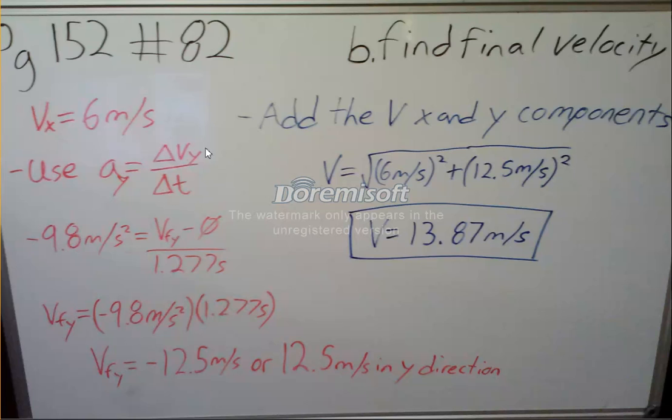We can use this formula right here: a_y component equals delta v_y component over delta t. So we know the acceleration is just negative 9.8 meters per second squared, and v_f_y we know is the initial velocity of zero over the time, 1.277 seconds, which we found earlier.